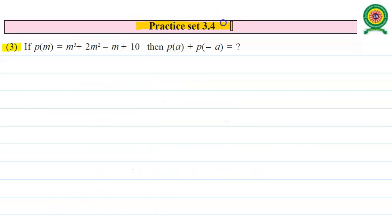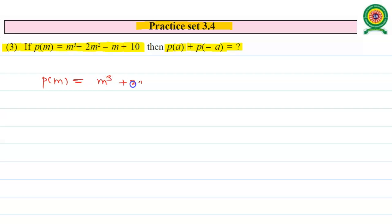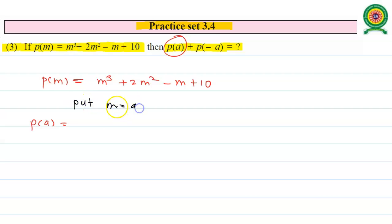The third sub-question from Practice Set 3.4: if P(m) equals m³ plus 2m² minus m plus 10, then find P(a) plus P(-a). First, evaluate P(a) by putting m equals a, replacing all m by a. So P(a) equals a³ plus 2a² minus a plus 10. Call this equation 1.